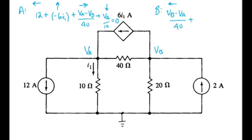Plus northbound current is positive 6I1. Plus current to the east is minus 2, because the 2 amps is pointing in that direction.